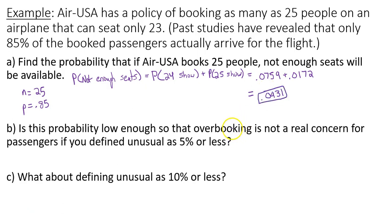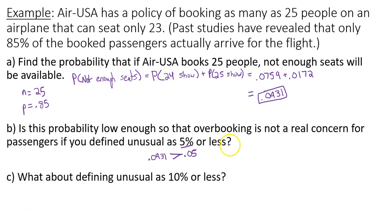This probability is low enough so that overbooking is not a real concern for passengers if you define unusual as 5% or less. Comparing 0.0931 to 0.05, it is greater than 0.05, so it is not unusual. So the answer here would be no — it's not low enough to be a concern.